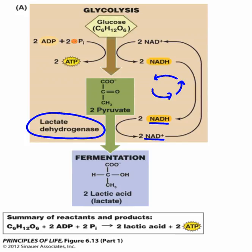If we look at the overall equation at the bottom, we have a glucose molecule, and in the presence of two ADP and two phosphates, we're going to get phosphorylation of ATP, and then we're also going to get the lactic acid byproduct. That's lactic acid fermentation.